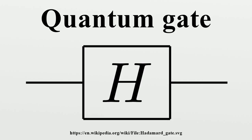Toffoli gate: The Toffoli gate, also called the CCNOT gate, is a three-bit gate which is universal for classical computation. The quantum Toffoli gate is the same gate defined for three qubits. If the first two bits are in the state |1⟩, it applies a Pauli-X on the third bit; else it does nothing. It is an example of a controlled gate. Since it is the quantum analog of a classical gate, it is completely specified by its truth table.